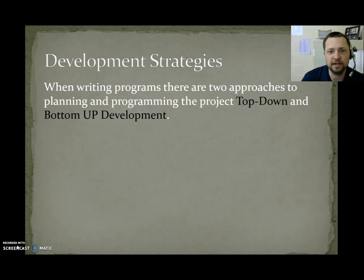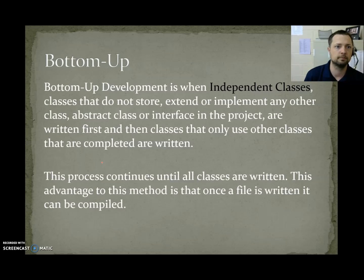Development Strategies. When writing programs, there are two approaches to planning and programming the project. You have top-down and bottom-up development strategies. Bottom-up development is when independent classes, classes that do not store, extend, or implement any other class, abstract class, or interface in the project, are written first and then classes that only use other classes that are completed are written. This way, you can build a class and then compile it. This process continues until all the classes are written. The advantage to this method is that once a file is written, it can be compiled.